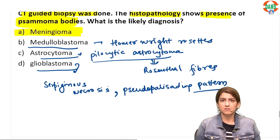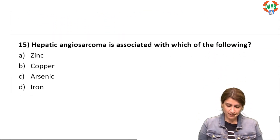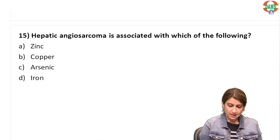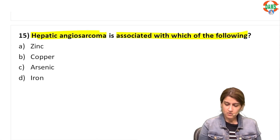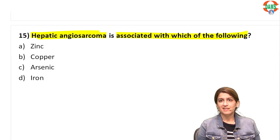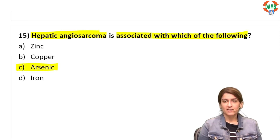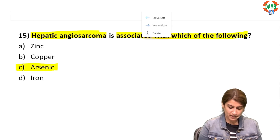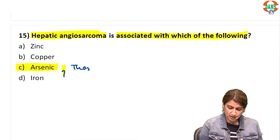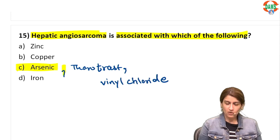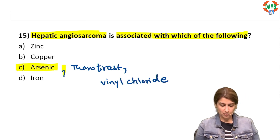Hepatic angiosarcoma is associated with arsenic, thorotrast, and vinyl chloride. All three are responsible for hepatic angiosarcoma. The correct answer is option C.